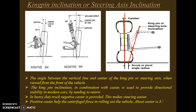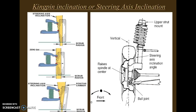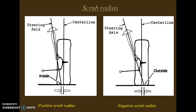Kingpin inclination, or steering axis inclination (SAI), is the angle between the vertical line and the center of the kingpin and steering axis when viewed from the front of the vehicle. The figures show SAI, kingpin inclination, and scrub radius on the ground — positive scrub radius and negative scrub radius.